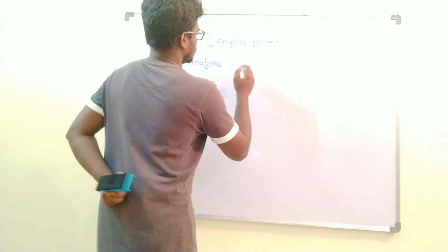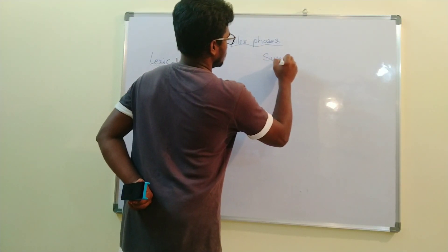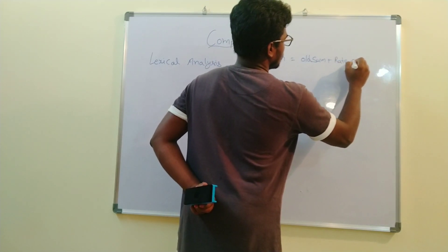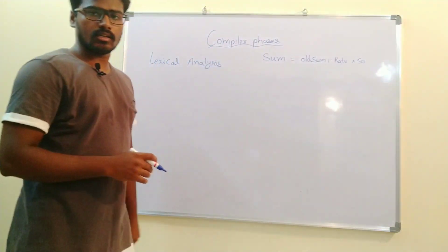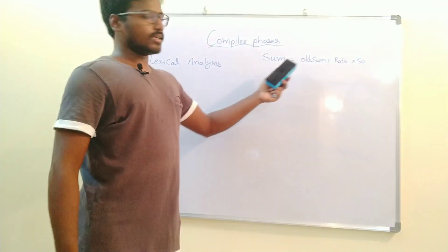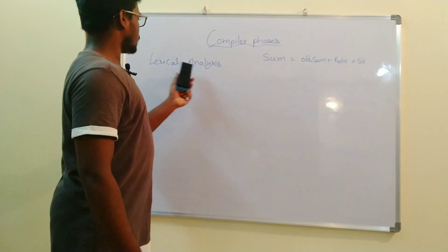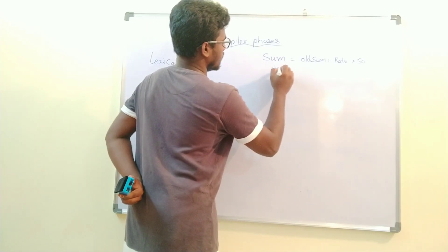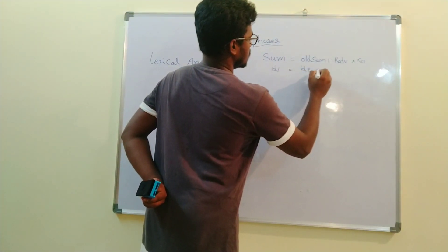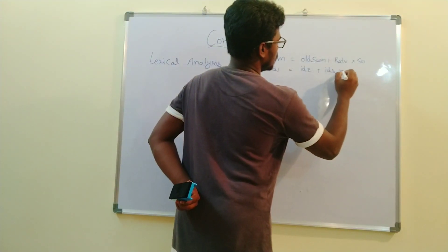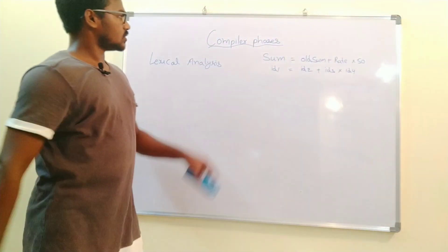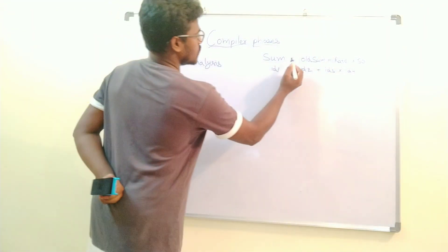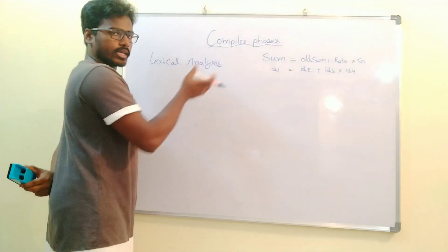For example, take the statement: sum = oldsum + rate * 50. It will read character by character and identify the tokens. The output of lexical analysis will be: if no error is found, it will note id1 = id2 + id3 * id4. Every token, including operators like =, +, and *, is also output in this phase.